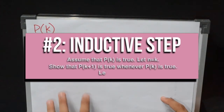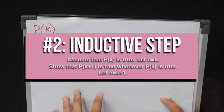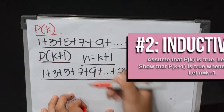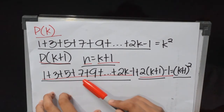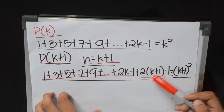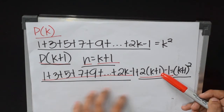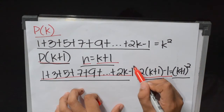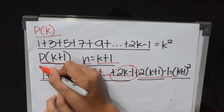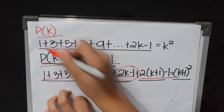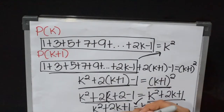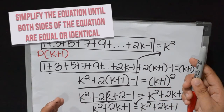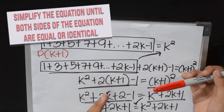The second part of the inductive step is to show that P(k+1) is true whenever P(k) is true. So the equation becomes 1 plus 3 plus 5 plus 7 plus 9 plus (2k minus 1) plus 2(k+1) minus 1, equal to (k+1) squared. We didn't remove (2k minus 1) since we need to show that P(k+1) is true whenever P(k) is true. We need to show that the premise satisfies the second step by making both sides of the equation equal or identical.